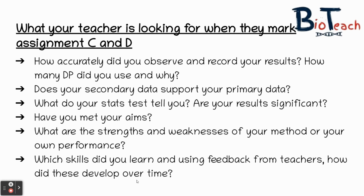I would also talk about the reflection part of your assignment. There's a huge reflective part to this assessment where you've got to talk about the strengths and weaknesses of your method, but also your own performance. You should highlight the skills that you've learned and use feedback from teachers to talk about which skills you've picked up on — for example, accurately measuring small volumes of reagents, or mastering a technique such as making your own lawn cultures. You can talk about how your skills developed over time. All of the points mentioned, and what you can see on your screens, can be written in rough in your logbook to give you a basic plan, and then you transfer that information into your final report for Learning Aim D.